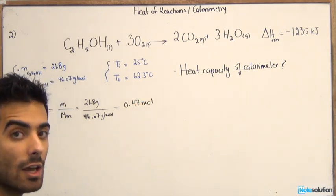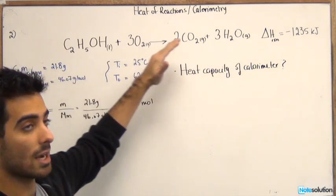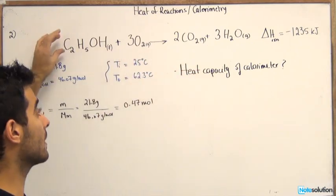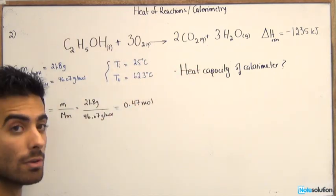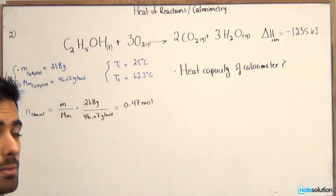So now we found the number of moles. As you can see, it's not one mole as this reaction indicates. The actual number of moles that are used in this combustion reaction came up to be 0.47 moles. So we need to know how much heat 0.47 moles release.